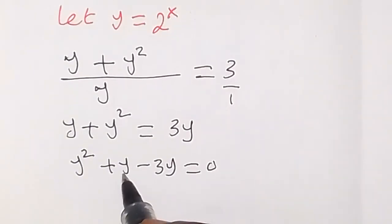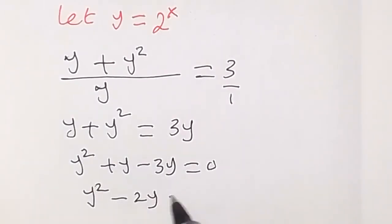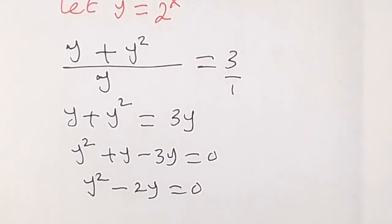Then we have plus y and take 3y here, that's minus 3y, then equals to zero. From here, plus y minus 3y, that's minus 2y. So we have y square minus 2y equals zero.